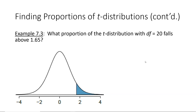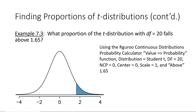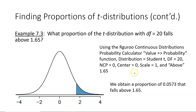For our next example I'm using example 7.3 from the textbook, which asks what proportion of the t-distribution with degrees of freedom equal to 20 falls above 1.65. Below you can see a sketch with the shading to the right of 1.65. Rather than demonstrating our guru again since it's very similar, I'll show what you would write on paper. The key differences are writing 'above' rather than 'below' and entering 1.65, and the final answer to four decimal places is 0.0573.